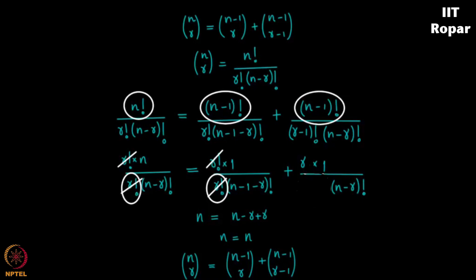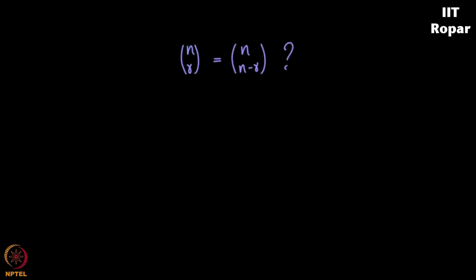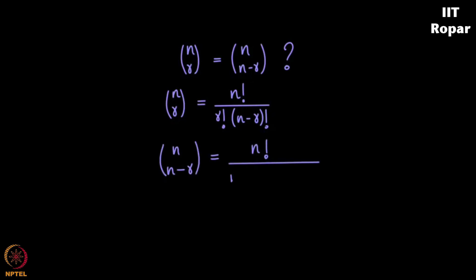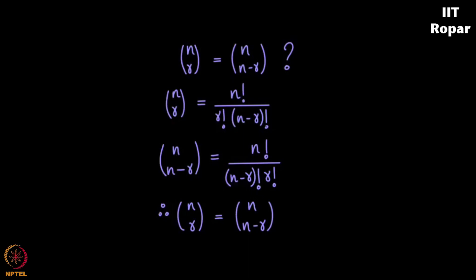Now how do we show that n choose r is equal to n choose n minus r in a very mathematical way? n choose r is factorial n divided by factorial r into factorial n minus r. And n choose n minus r is n factorial divided by n minus r factorial times n minus of n minus r factorial. You see n and minus n get cancelled and this becomes r. As you can see the left hand side is equal to right hand side — LHS equals RHS — and hence we show that n choose r is indeed equal to n choose n minus r.